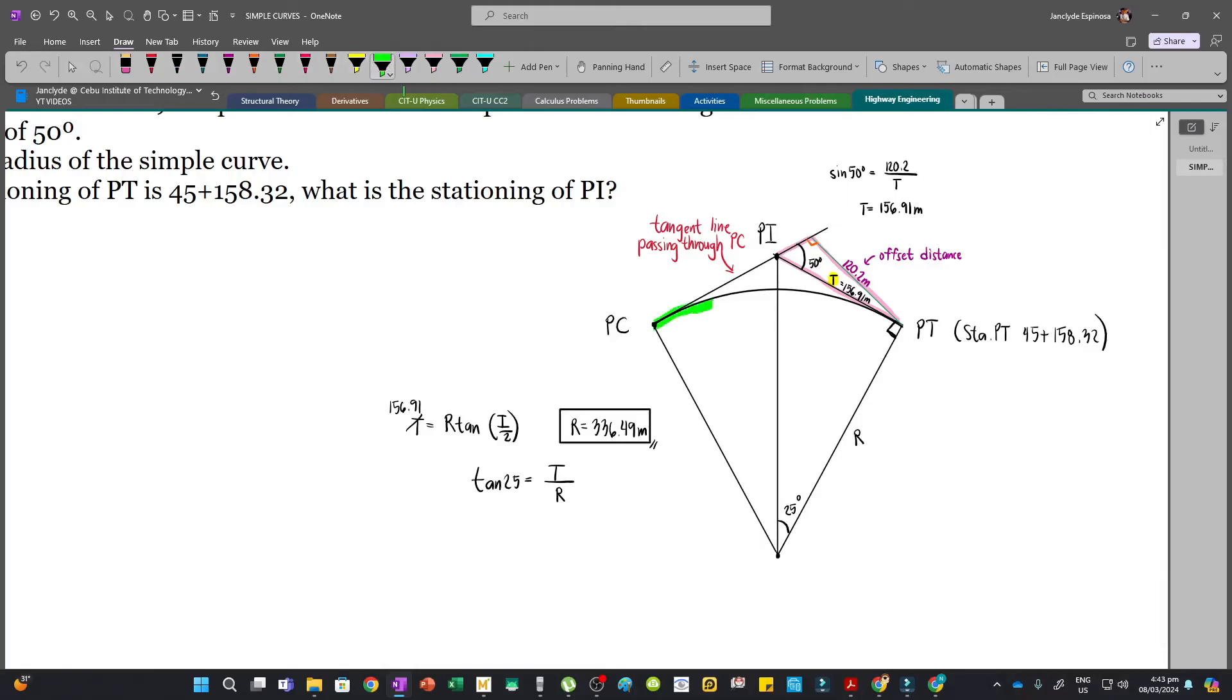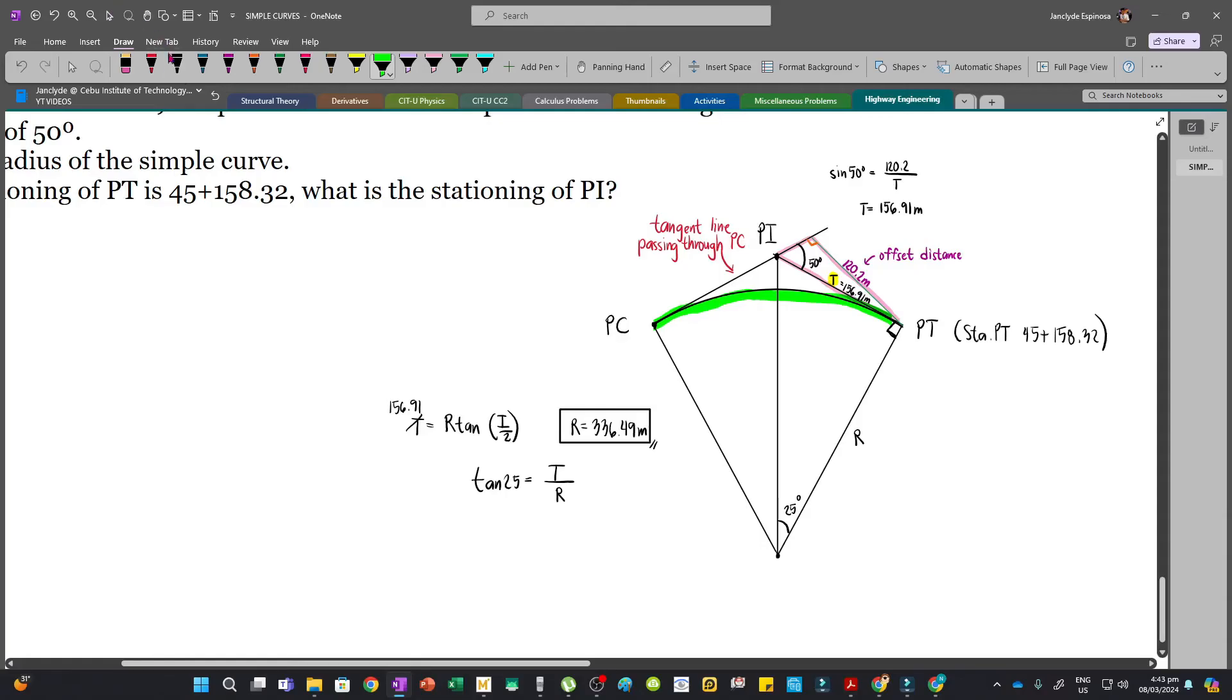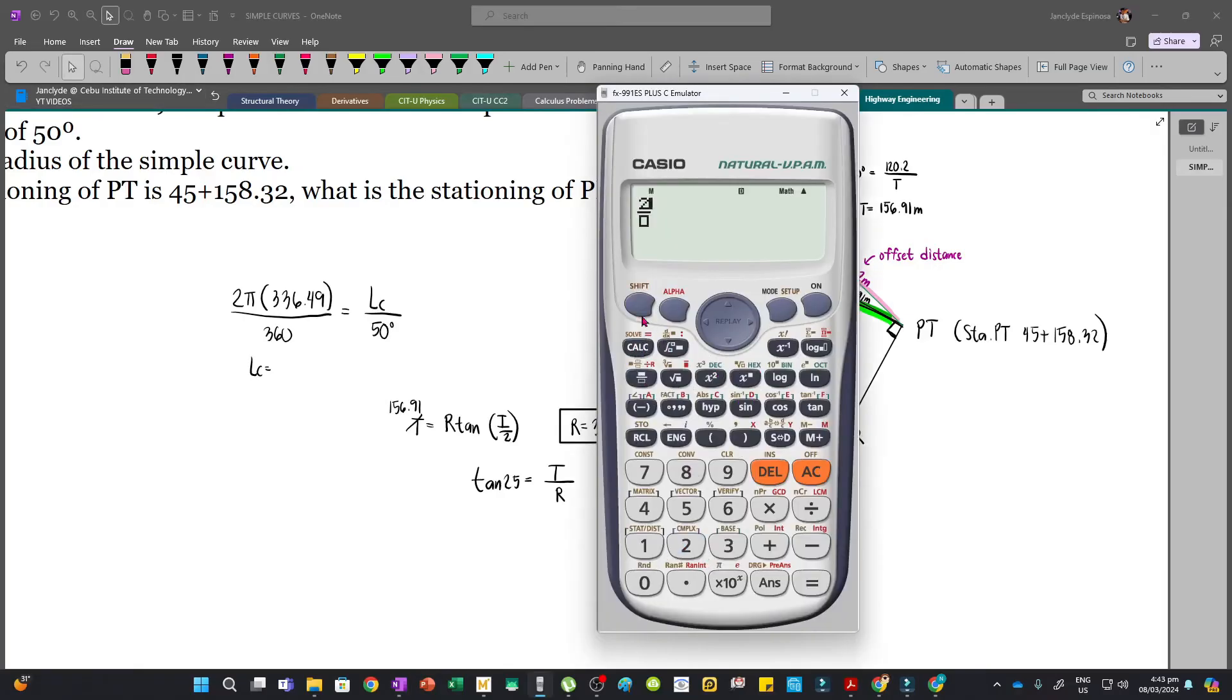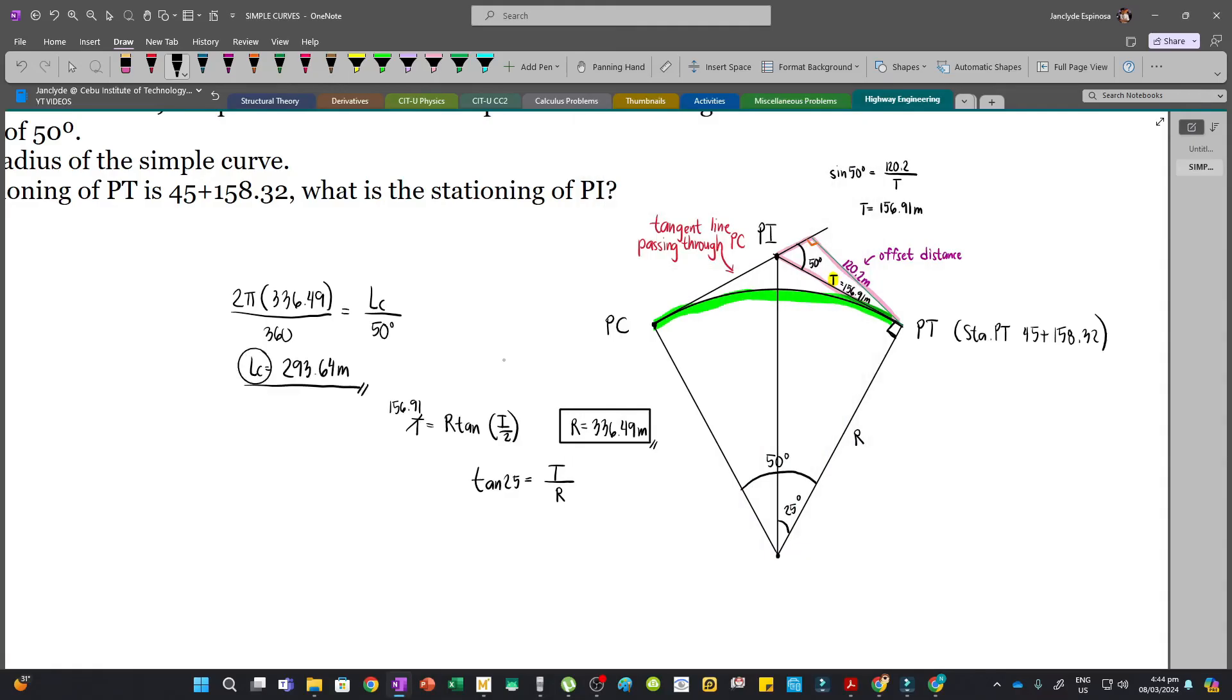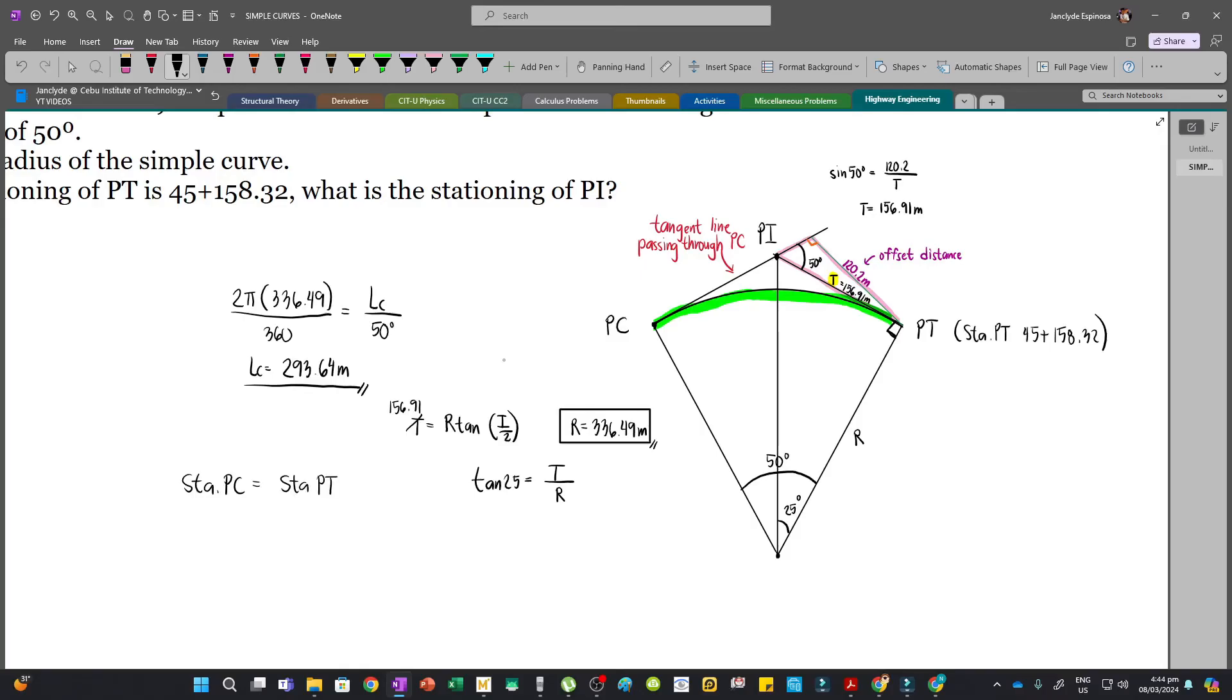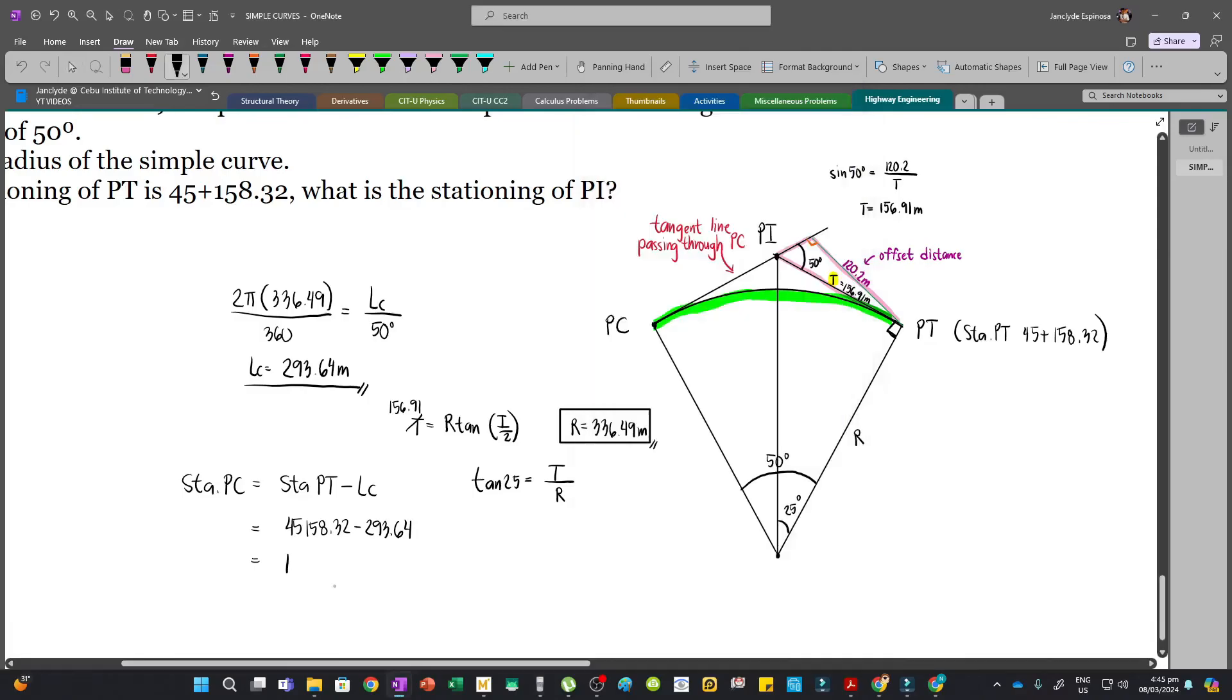So first, we'll solve the length of curve, which is LC. We'll use ratio and proportion. So 2 pi R, in which our R is 336.49, over 360 is equal to LC divided by our central angle which is 50 degrees. So our LC will be 2 pi times 336.49 over 360 multiplied by 50. So we have 293.64 meters. Since we have LC, we can now solve the stationing of PC. The stationing of PC is the stationing of PT minus the length of curve. So we have 45 plus 158.32 minus LC which is 293.64. We have 44 plus 864.68. This is the stationing of PC.